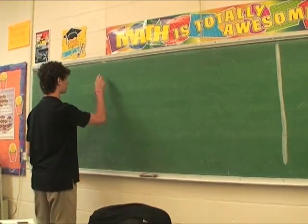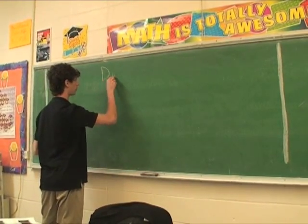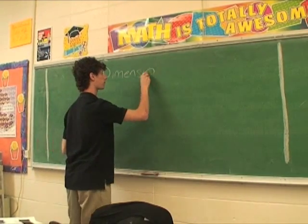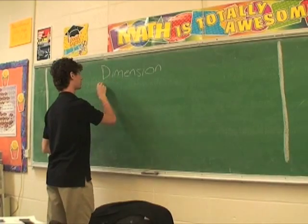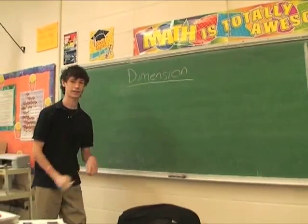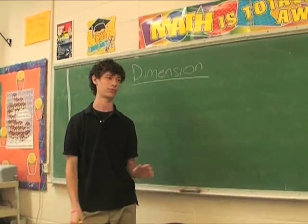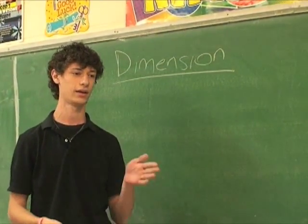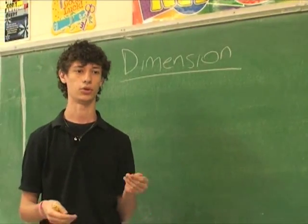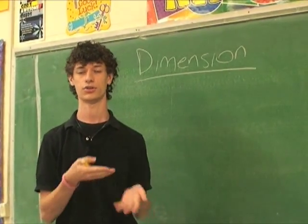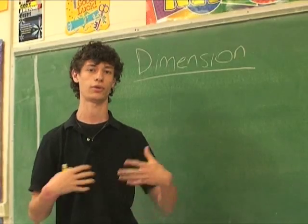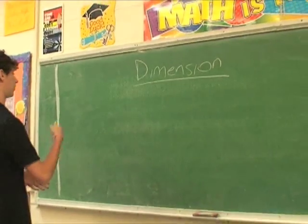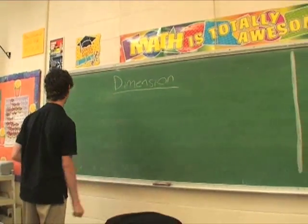Looking at dimensions in general — one interesting physicist's definition of a dimension is 'degree of freedom,' which really sums it up. In one dimension you can only move one way, in two dimensions two ways, in three dimensions three ways. So it's the degrees of freedom you have in your motion. Let's go over zero, one, two, and three dimensions.